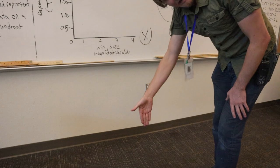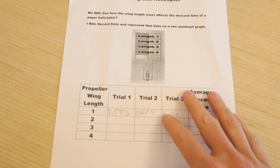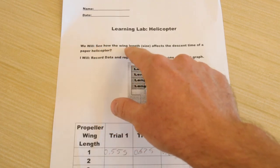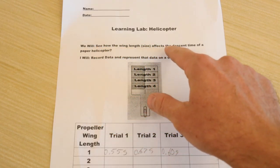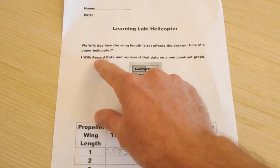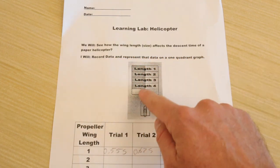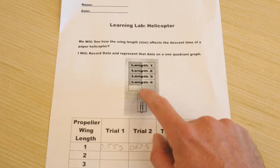Yeah, it fell a little more straight down. Okay, and here is our learning lab worksheet. We have a little data collection table here. We will see how the wing size, wing length affects the descent time of a paper helicopter and I will write and record data and represent that data on a one quadrant graph.